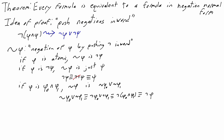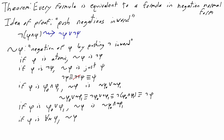Similarly, if phi is the formula phi-zero or phi-one, then squiggly phi is squiggly phi-zero and squiggly phi-one. The quantifier case is analogous. If phi is for all x psi, then the squiggly negation of phi is exists x squiggly negation of psi.